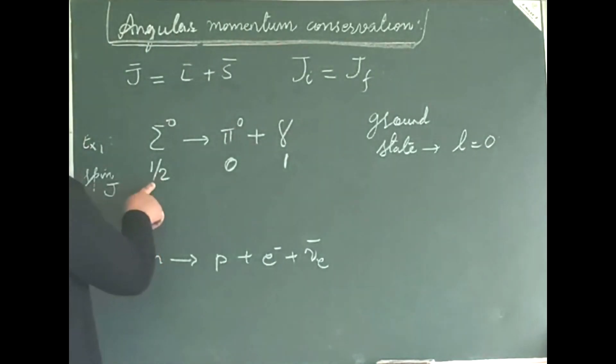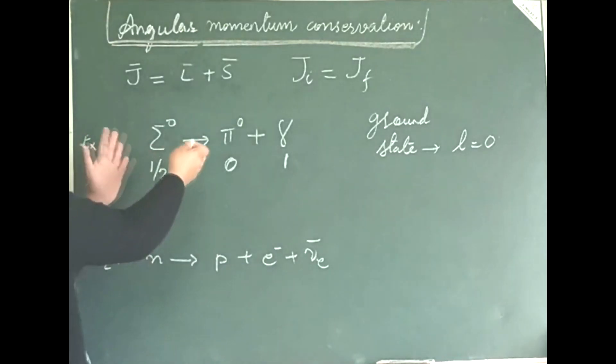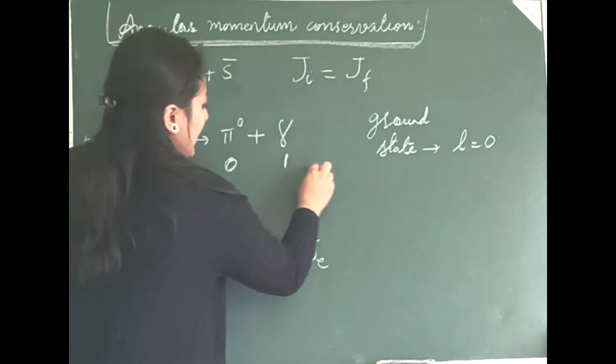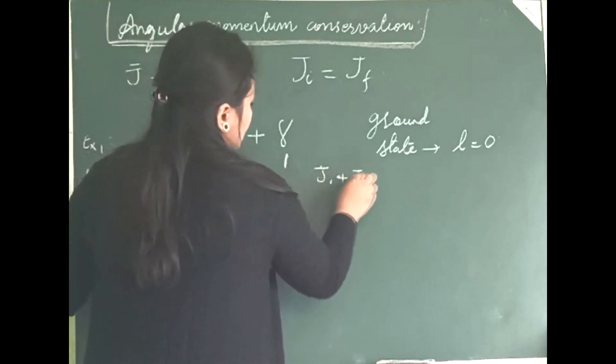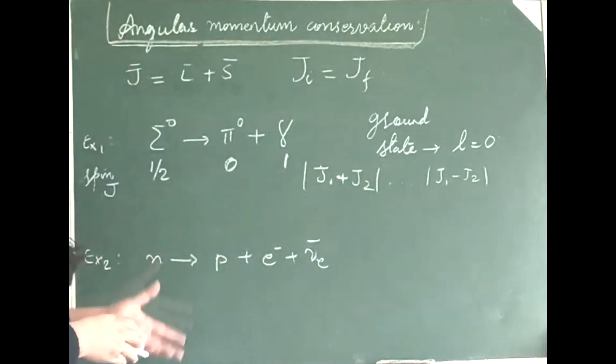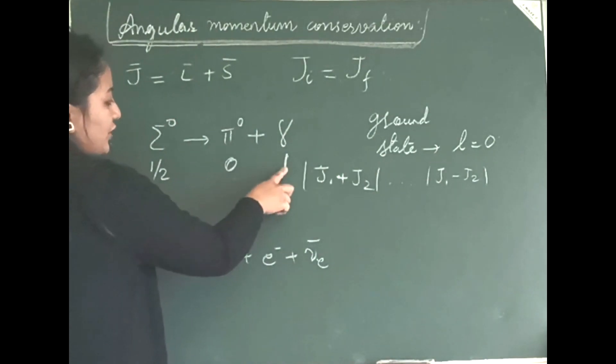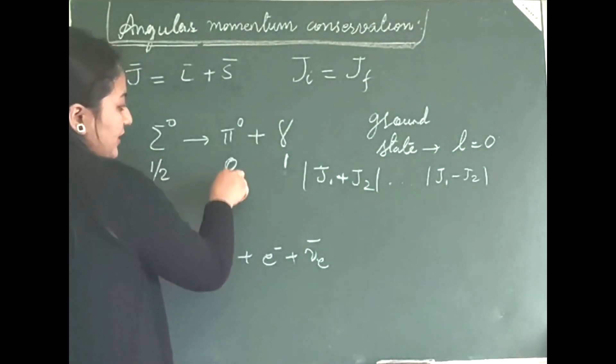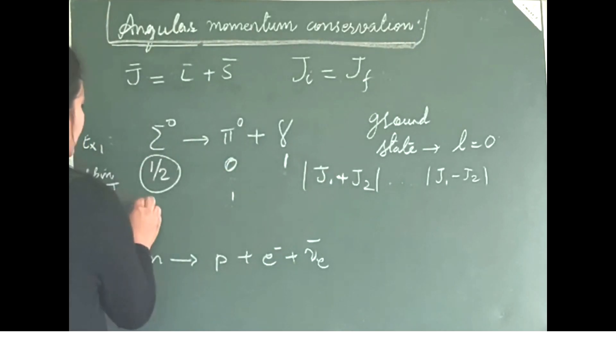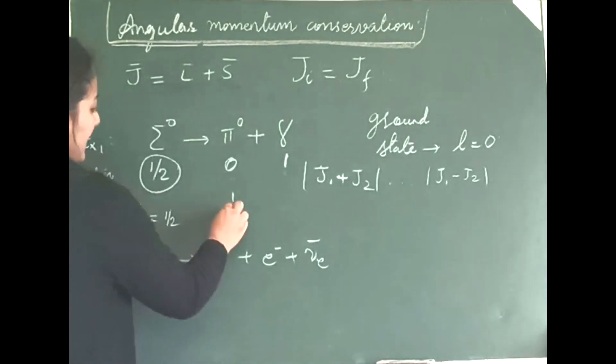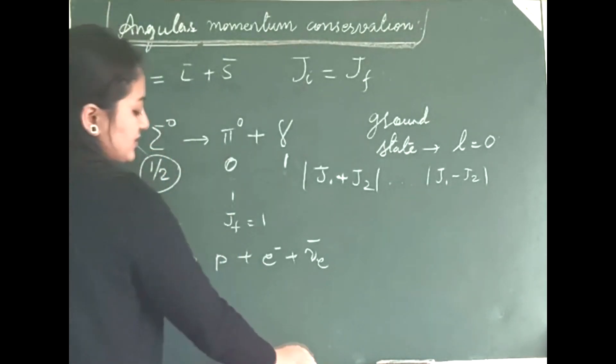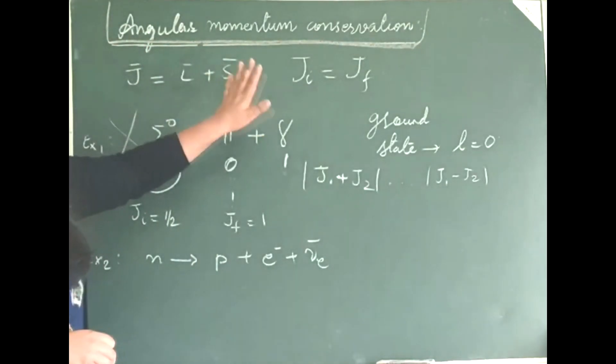Now, how do I add these spins? On the reactant side, it is half. Whereas in the product side, what I need to do is I need to add it as J1 plus J2 till J1 minus J2. This is how you add momentums. This side, it is going to be 1 plus 0, it is going to be 1 and 1 minus 0, again it is going to be 1. J1 is half here and Jf is 1 here. Hence, this reaction is forbidden by your angular momentum conservation.